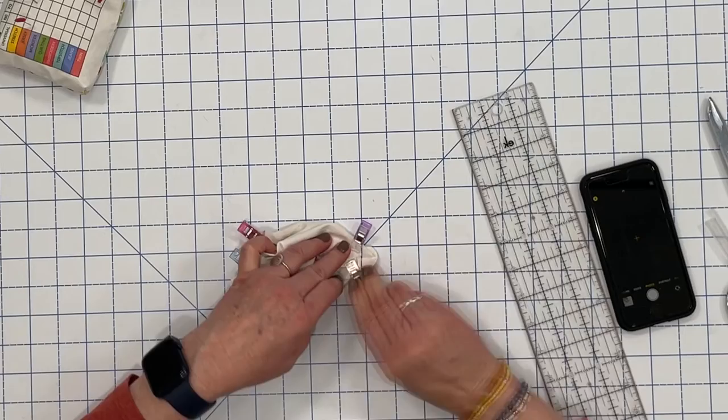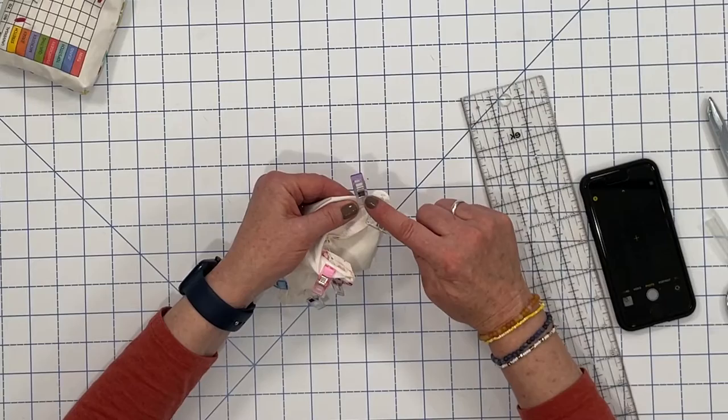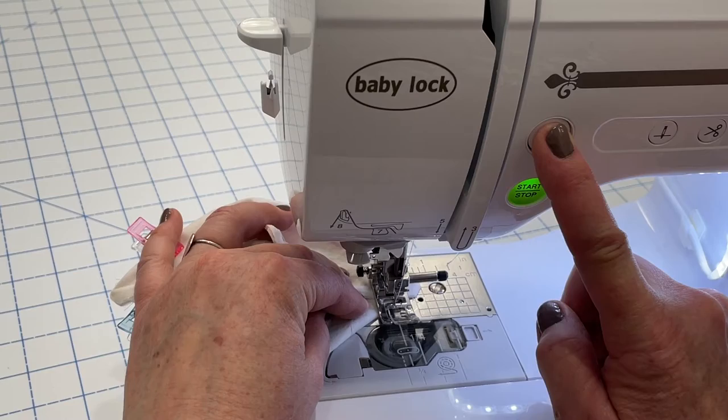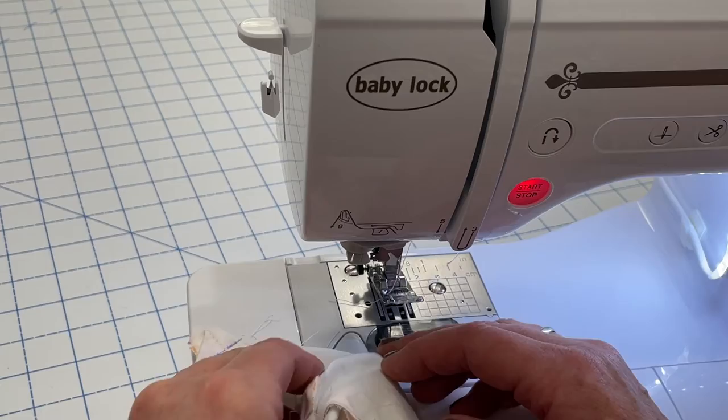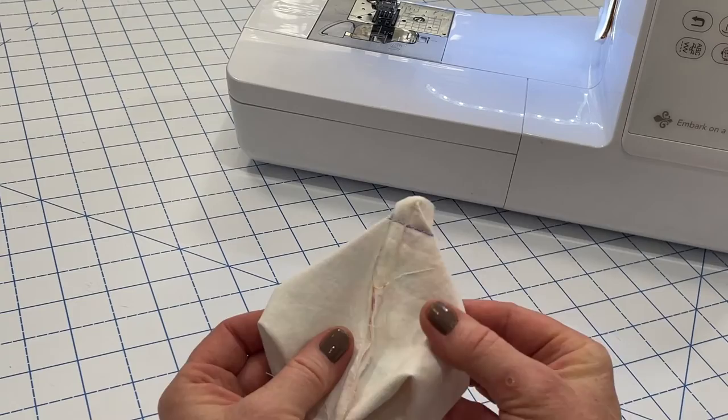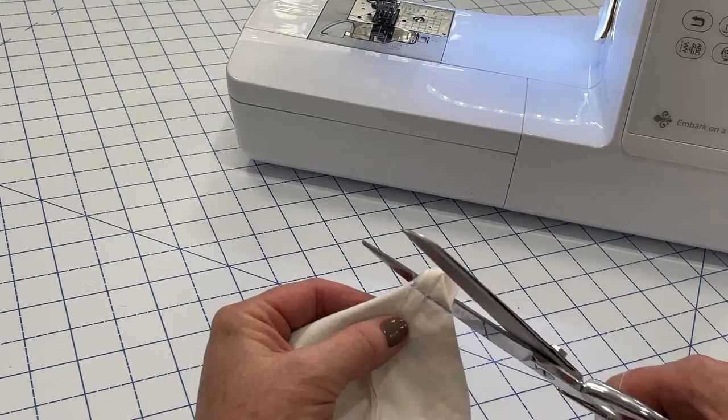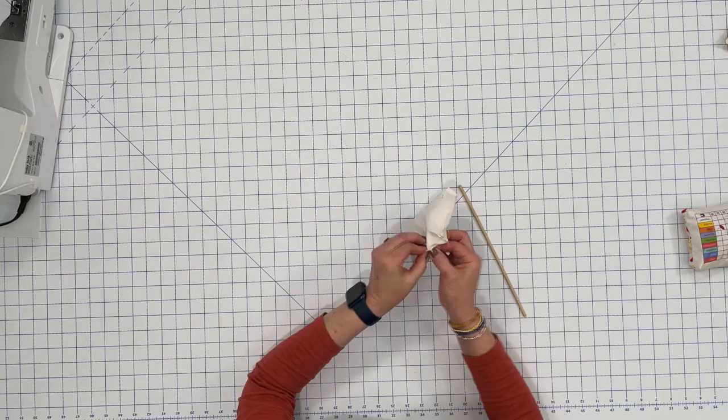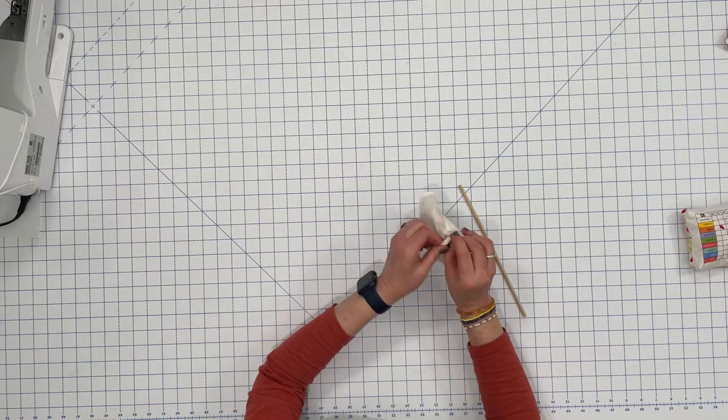Now we're ready to go ahead and stitch down that line, backstitching at the beginning and the end of the seam. We'll clip off those corners leaving a quarter inch seam allowance. Find the hole that you left open so that you have the print showing and the back piece or the top piece and turn it right side facing out.